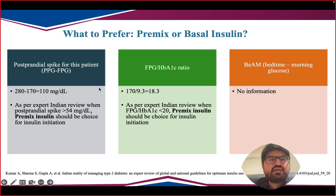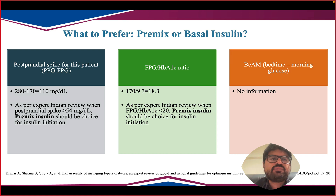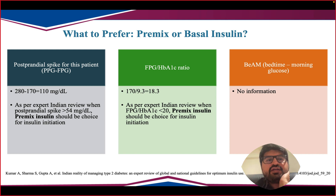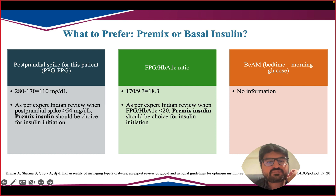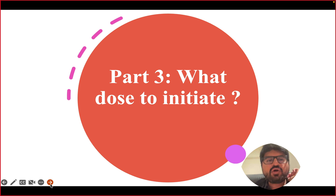When to prefer premix over basal insulin: use the FPG/HbA1c ratio — if less than 20, prefer premix. Another formula is post-prandial glucose minus fasting glucose; if this difference exceeds 54 (per Indian review data), consider premix insulin. A third indicator is bedtime minus morning glucose — if more than 100, premix is worth considering.